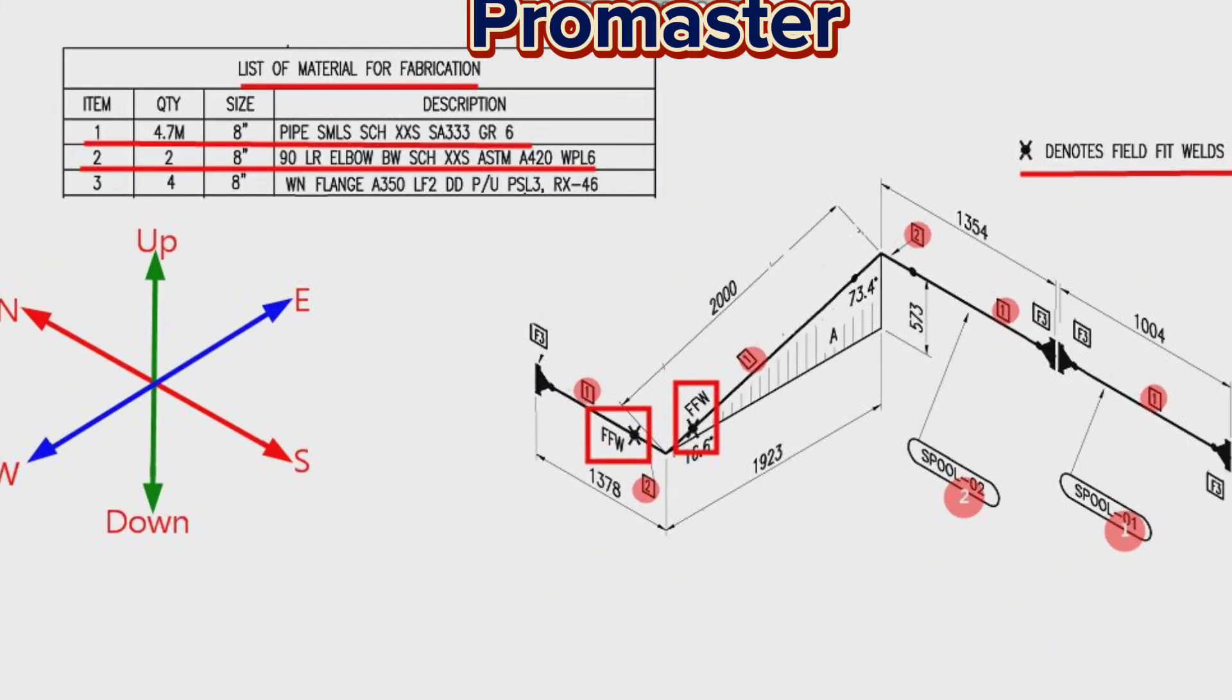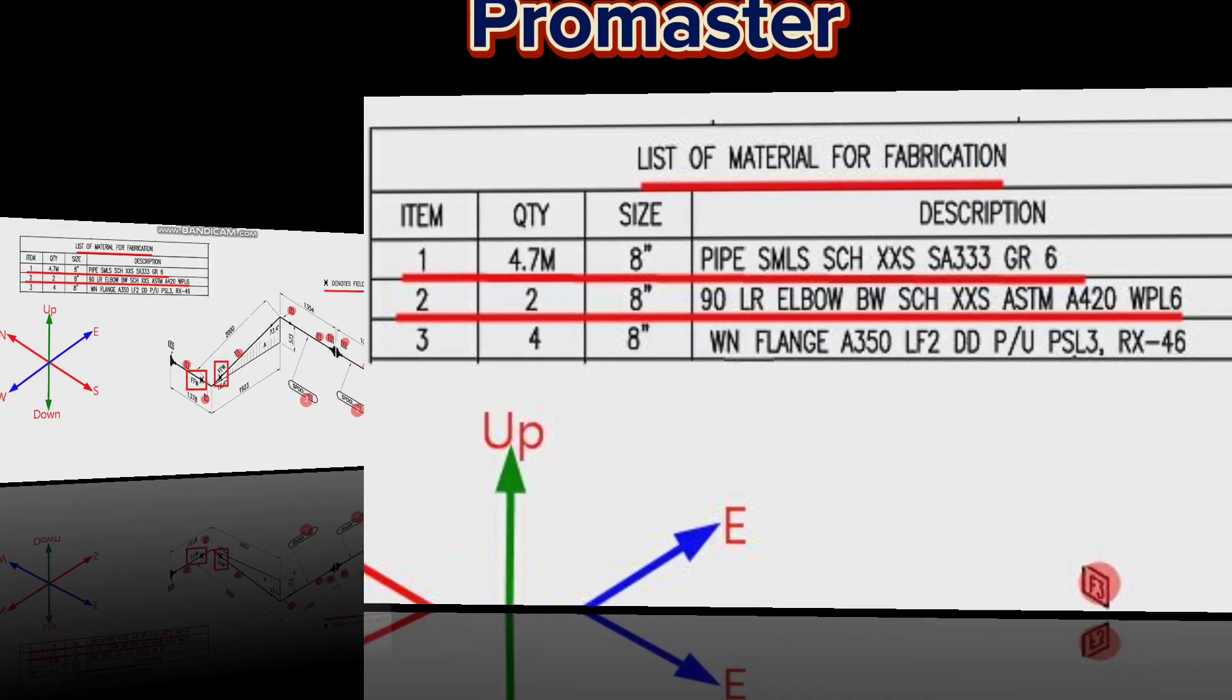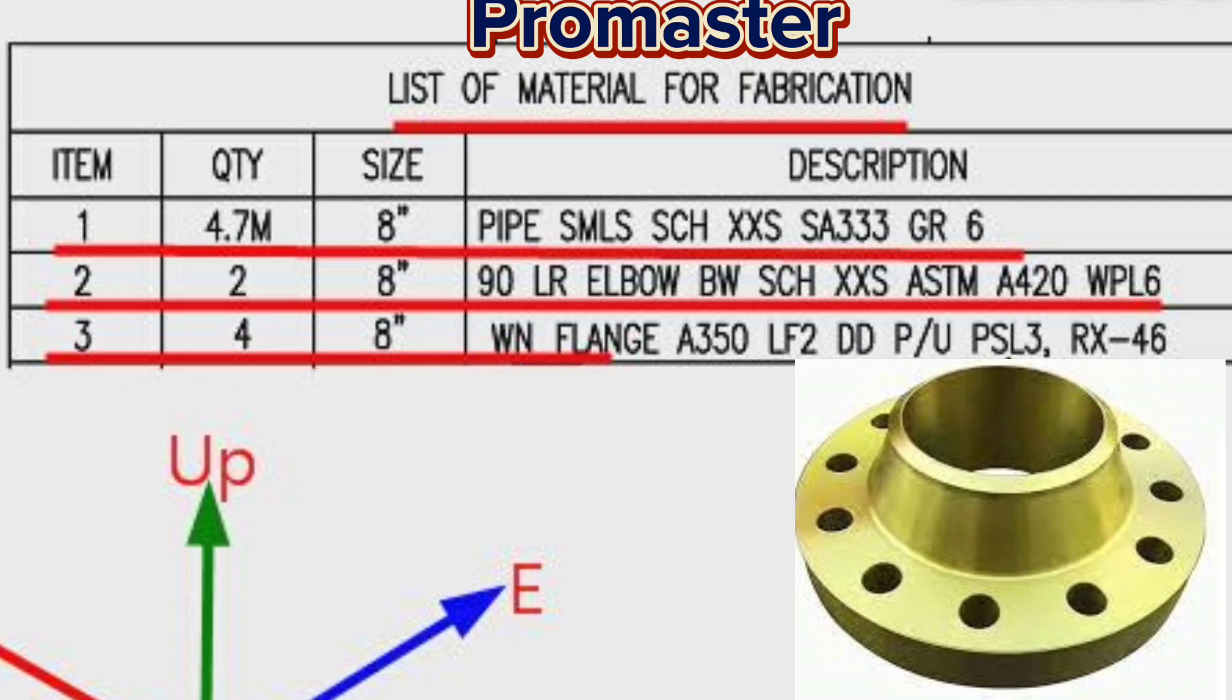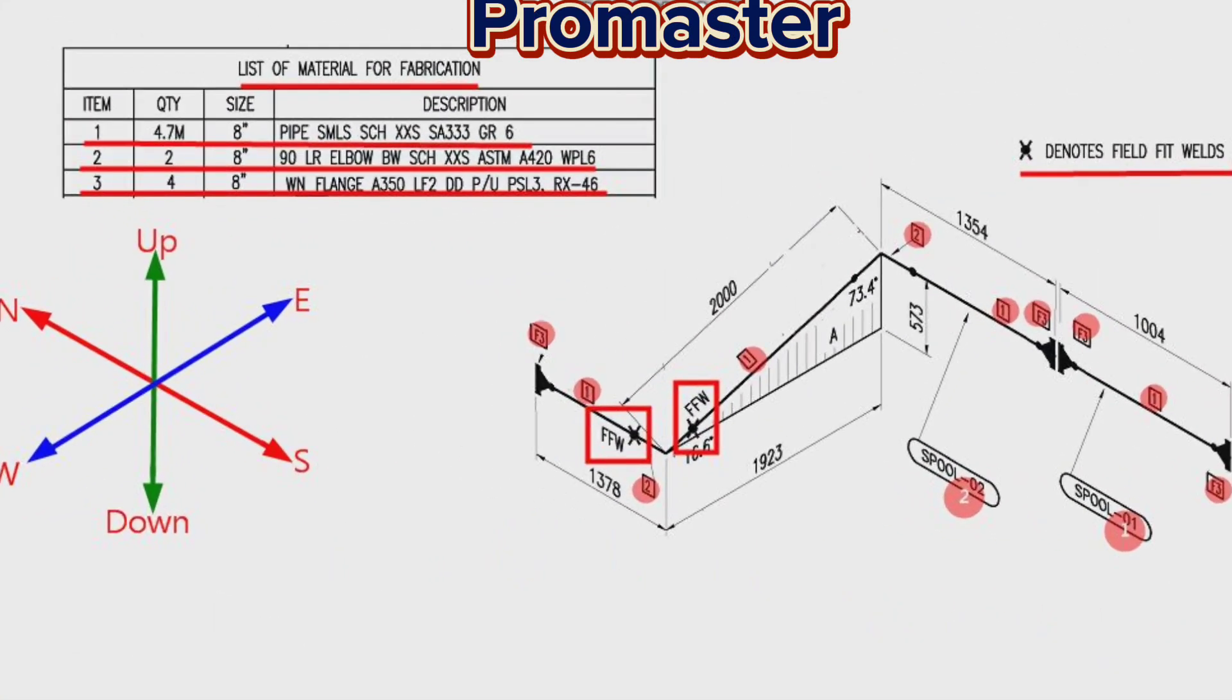Detail number 3 was used in four places in the pipe drawing. Item number 3 is 8-inch weld neck flange, A350, quantity 4 pieces. Every pipe drawing has such a sketch. This indicates the directions. By studying these directions, we can easily read any pipe isometrics.